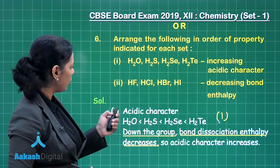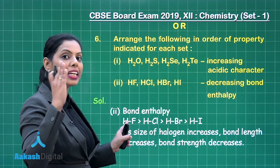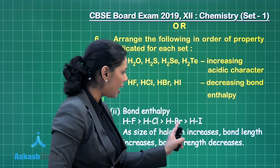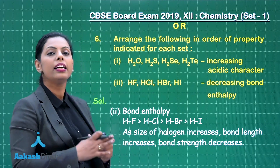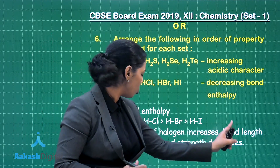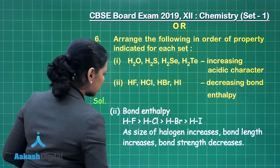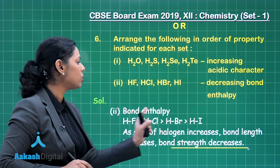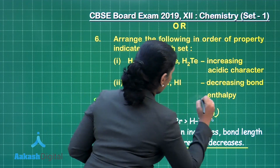For the second part, arrange in decreasing order of bond enthalpy. The order is HF, HCl, HBr, then HI. This is because these are halogens — elements of group 17 — and as the size of the halogen increases, bond length increases, so bond strength and bond enthalpy decrease. Writing this order gives you 1 mark.